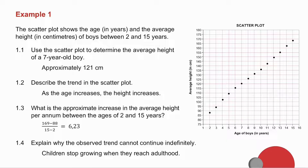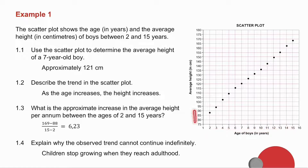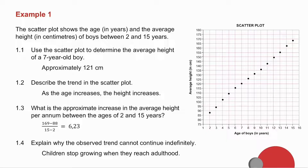1.2 says describe the trend in the scatter plot. As the age increases, the height increases. 1.3 asks: what is the approximate increase in the average height per annum between the ages of 2 and 15?